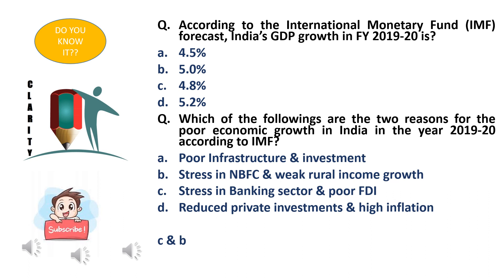The right answer is option C - 4.8%. The IMF has forecasted India's GDP for 2019-20 as 4.8%. Let's move on to the next question: which of the following are the two reasons for poor economic growth in India in the year 2019-20, according to the IMF?